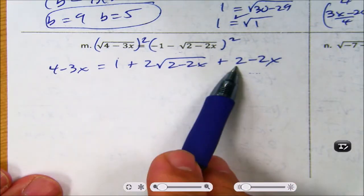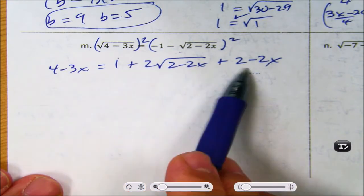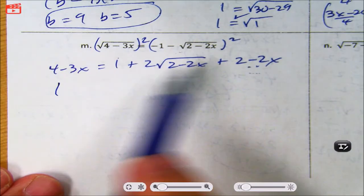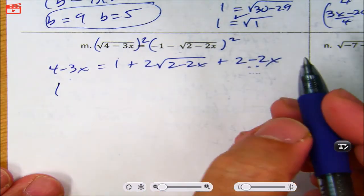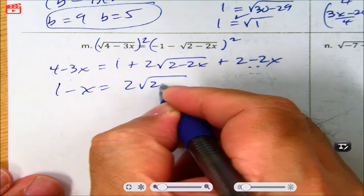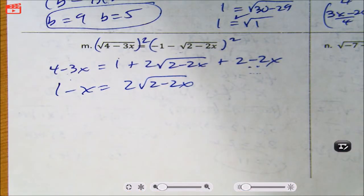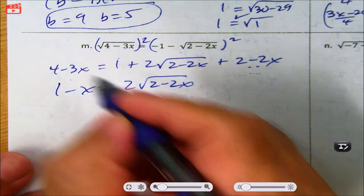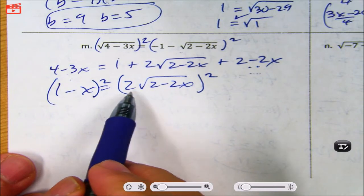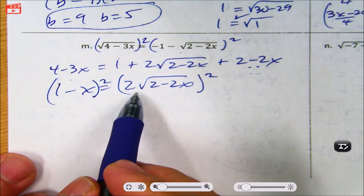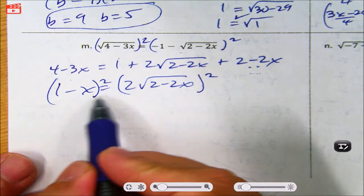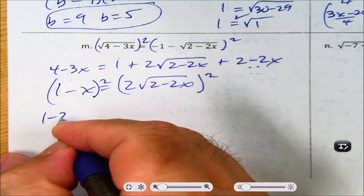Now let's clean this up. Moving 3 to the left: 4 minus 3 is 1. Moving the negative 2x to the left gives 1 minus x equals 2 root 2 minus 2x. I'm going to avoid fractions this time and just square both sides directly without isolating further. When I square 1 minus x, I get 1 minus 2x plus x².